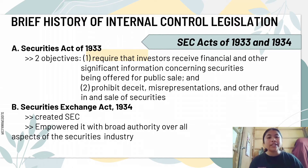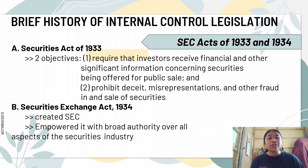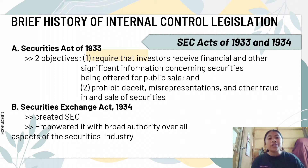The second was the Securities Exchange Act of 1934, which created the Securities and Exchange Commission and empowered it with broad authority over all aspects of the securities industry, including authority regarding auditing standards. This Act also requires all publicly traded companies to be audited by an independent auditor such as a CPA, and requires all companies to report to the SEC and maintain a system of internal control that is evaluated as part of the annual external audit.